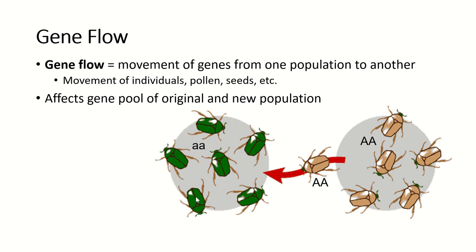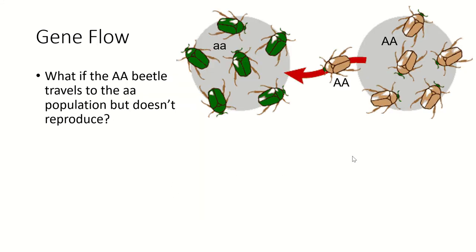In this example, we have one population of beetles that is entirely the recessive allele, making them green, and another that is entirely the dominant allele, making them brown. If one brown beetle goes to the green population and reproduces, it creates a new mixed gene pool in that green population — a big effect. But if the brown beetle travels there and doesn't reproduce, that's not gene flow. You have to leave your genes there for gene flow to have occurred.